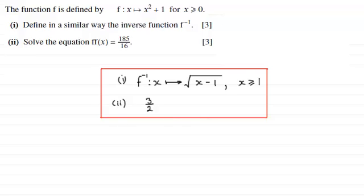OK, welcome back. The numerical answers to part one and two: For part one we've got the inverse function of f is such that x maps onto the root of x minus 1, and the domain is x is greater than or equal to 1. And for the second part, the answer for x is 3 over 2 or 1 and a half.